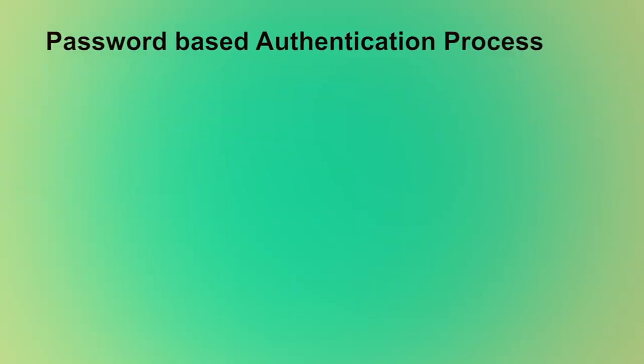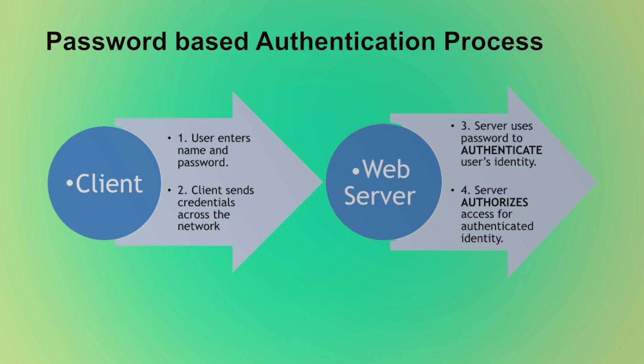This figure shows how a client and web server interact using password-based authentication. First, the user enters his name and password. The client sends the name and password to the server across the network. The web server uses the password to authenticate the user's identity, and only authorizes access for authenticated identities.